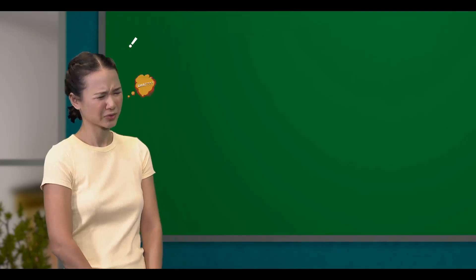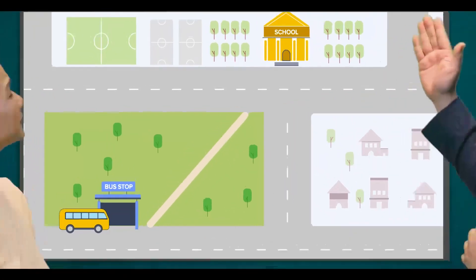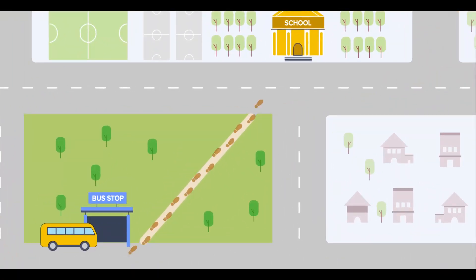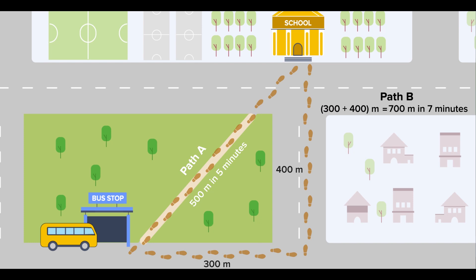Wait, what? Let me show you here. This is your usual path from the bus stop to school: 500 meters in 5 minutes. Let's call this path A. This is your path today: 300 meters right, followed by 400 meters upwards, for a total of 700 meters in 7 minutes. Let's call this path B.